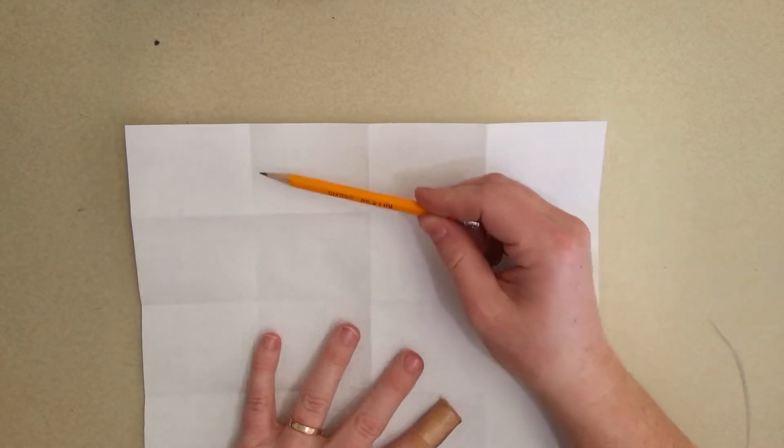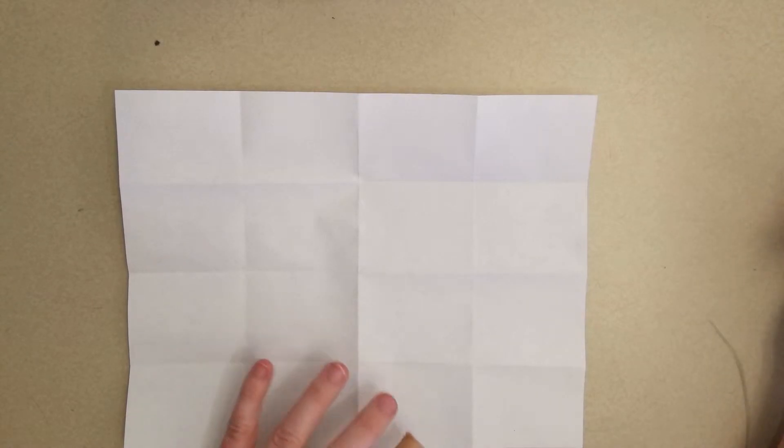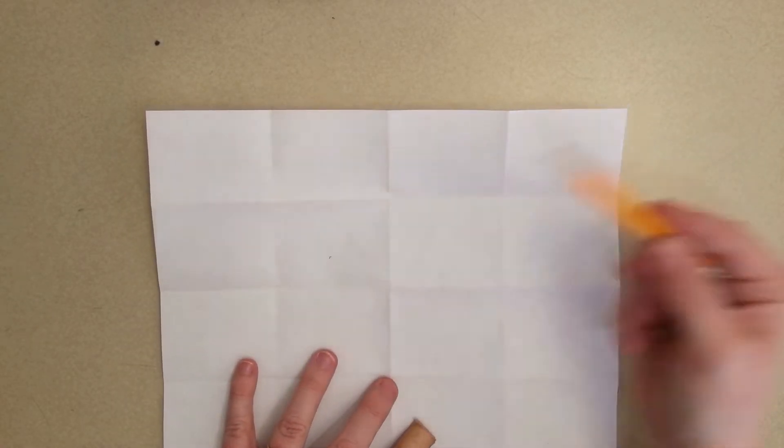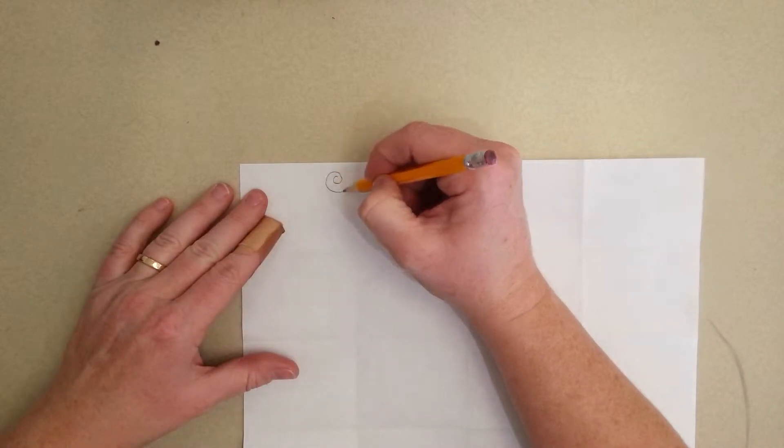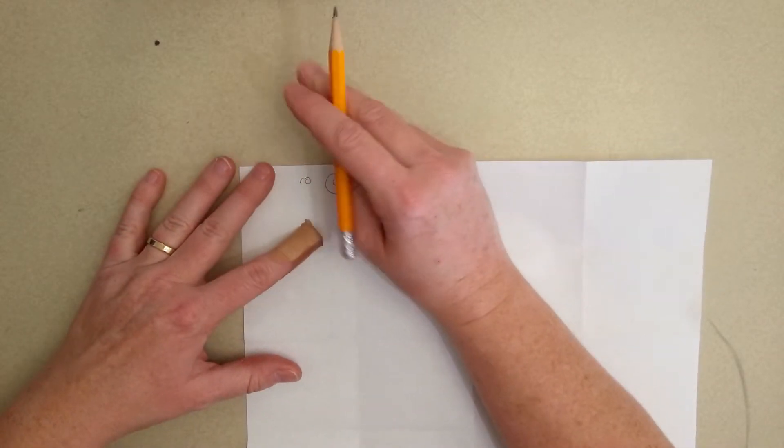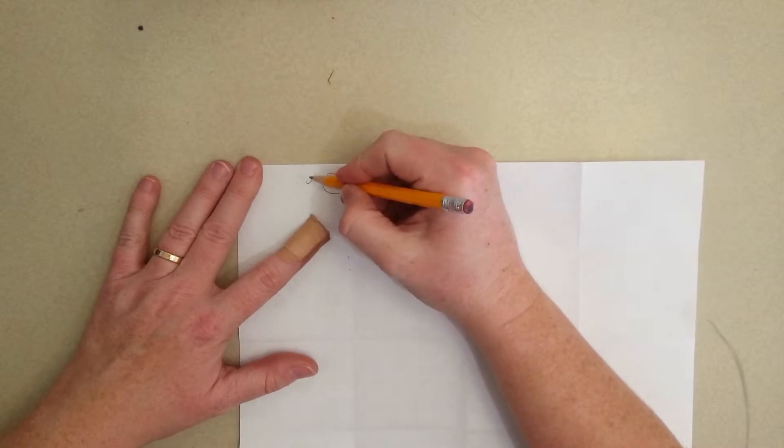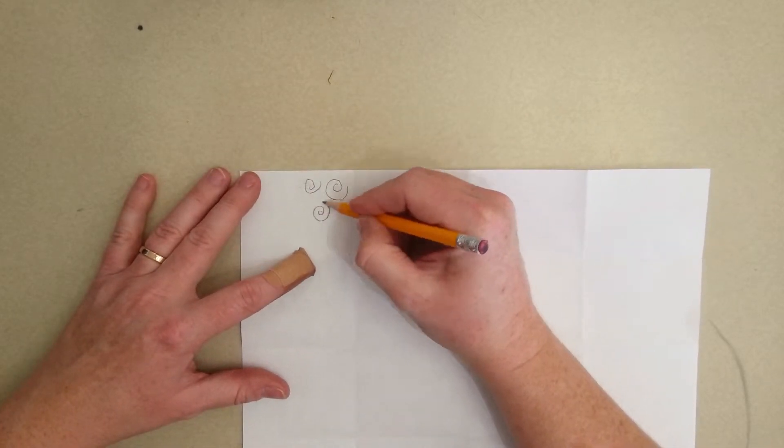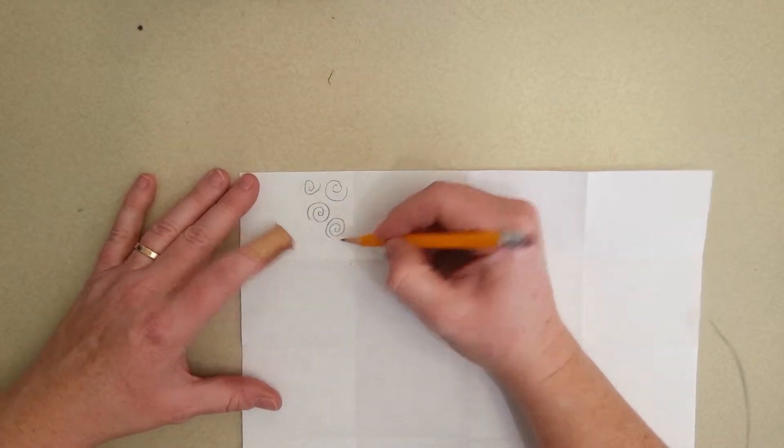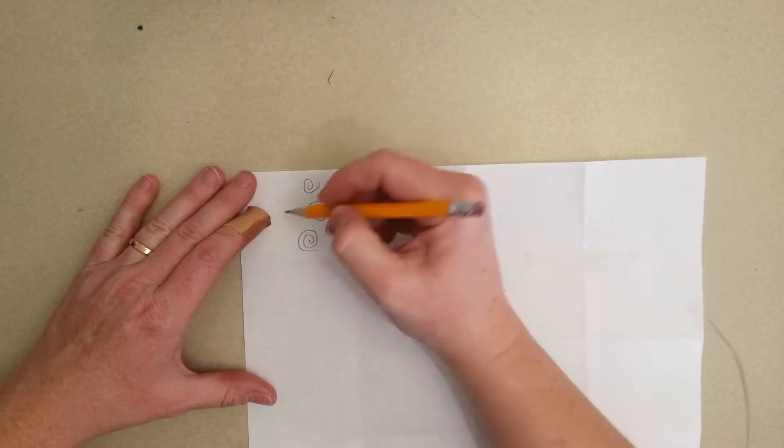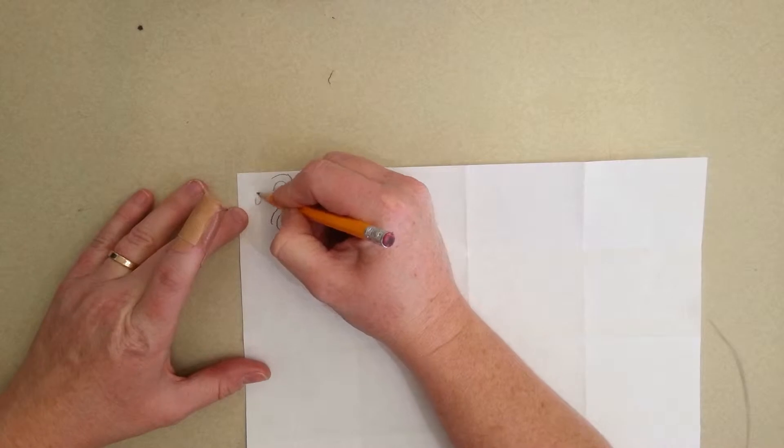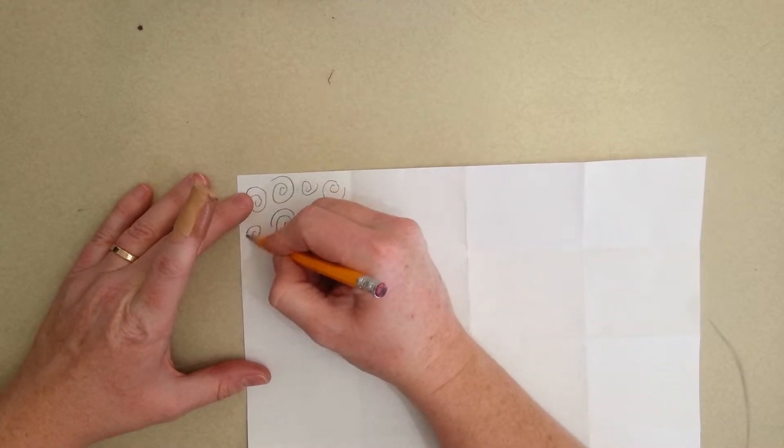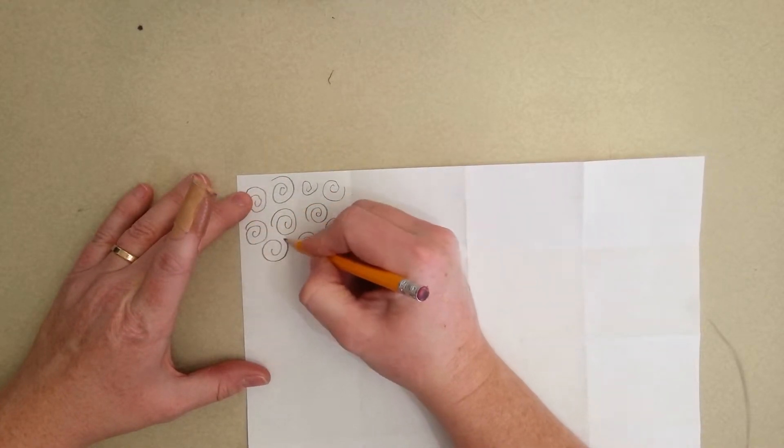And this is your brainstorming paper. So in each of these squares, I want you to come up with a different, or I want you to fill it with a different type of line. So this one, I'm going to do spirals. And fill up the whole space.